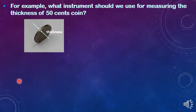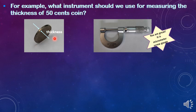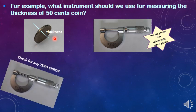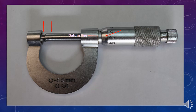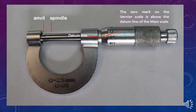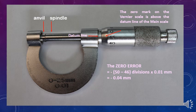Another example: what instrument should we use for measuring the thickness of the 50 cents coin? It is the micrometer screw gauge. Please check for any zero error. Make sure the anvil is in contact with the spindle when checking for the zero error. The zero mark on the thimble scale is above the datum line of the main scale. Therefore, the zero error of this micrometer screw gauge is negative: (50 minus 46) divisions multiplied by 0.01 mm, giving a negative zero error of 0.04 mm.